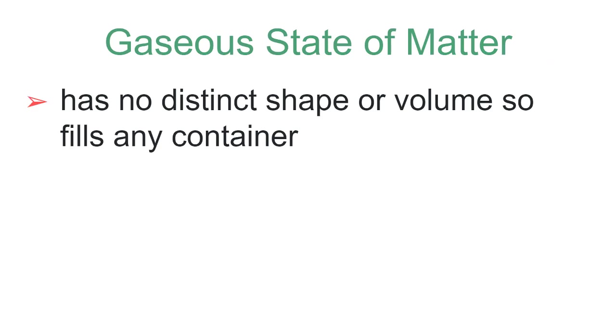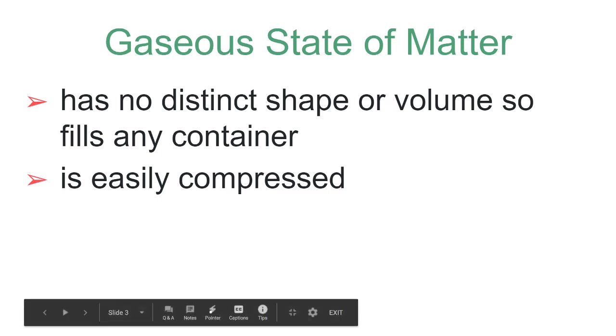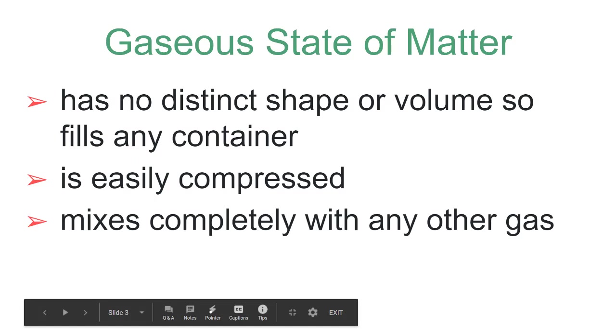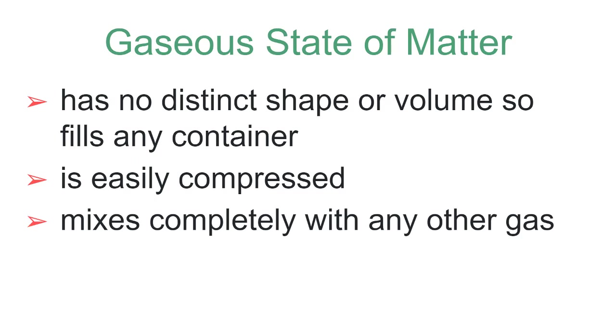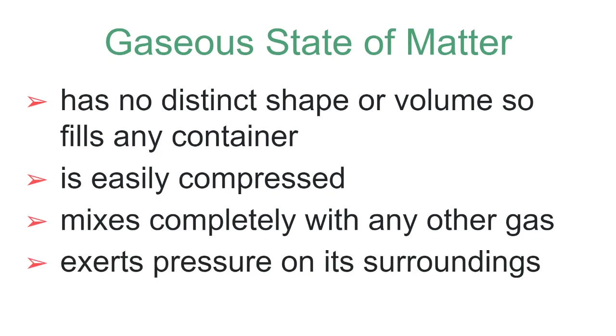So what do we know about gases? We know they have no distinct shape or volume. They fill any container you put them in. They're easily compressed because there's all that space in between them, and so we can squash them down. And if we squash them down enough, they get too close and they become a liquid. That's what pressurized gases do. They turn into liquids. And they will mix completely with other gases. If we put two gases in the same area, they'll mix completely so that they're uniformly mixed. In other words, homogeneous.